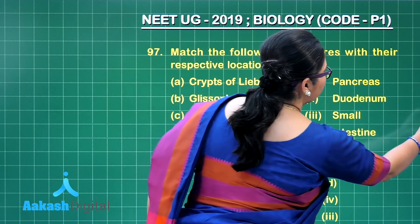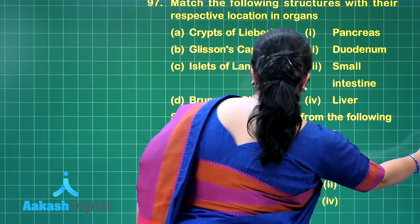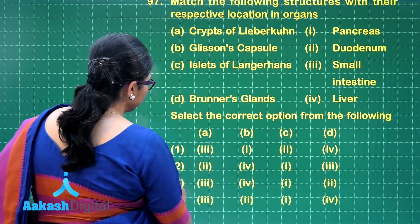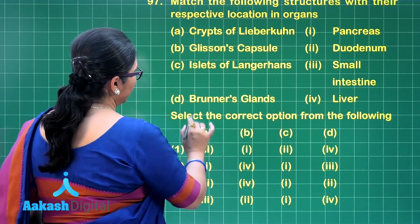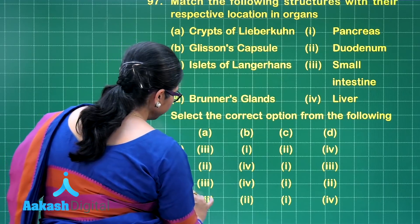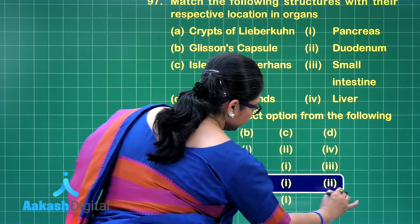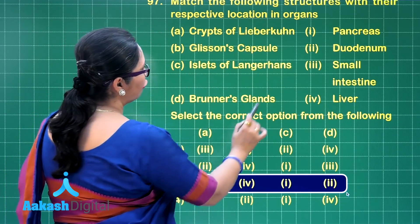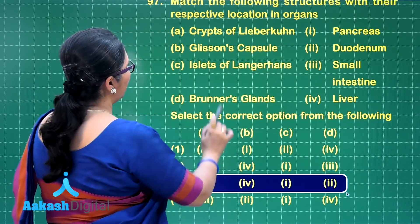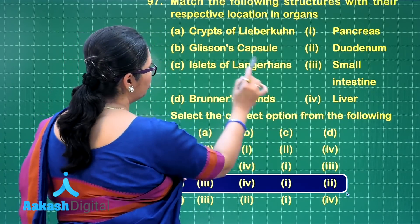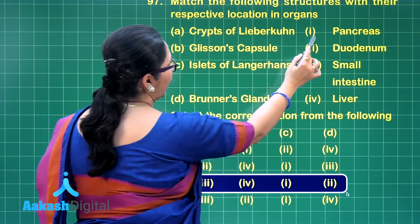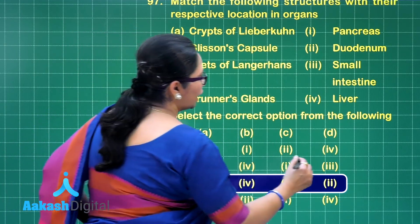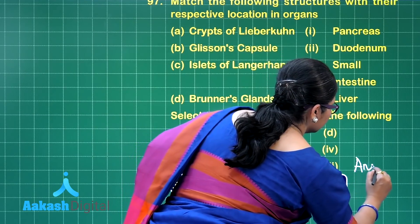Let us review the options so that we can select the correct option. Matching the options, we find it is option number 3: Crypts of Lieberkühn with small intestine, Glisson's capsule with liver, Islets of Langerhans with pancreas, and lastly Brunner's glands with duodenum. So the right answer is option 3.